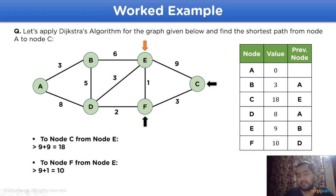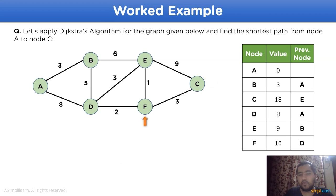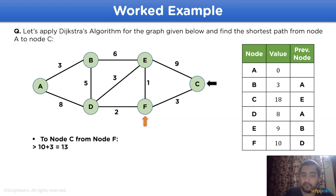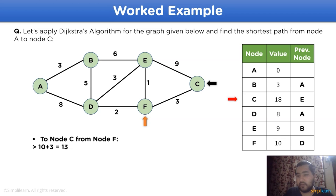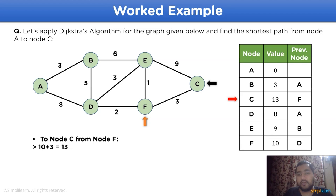Let's decide the next current node, which is node f, because the distance value 10 is the lowest compared to 18 for node c. The directly connected node is node c, and the distance comes to 10 plus 3, which is 13. Comparing: the current value of node c is 18 and the new value is 13 — 13 is less, so the new table shows node c with value 13 and previous node as f.